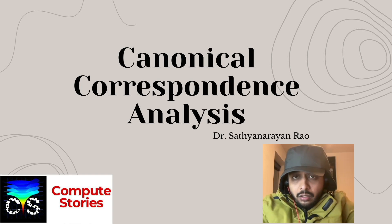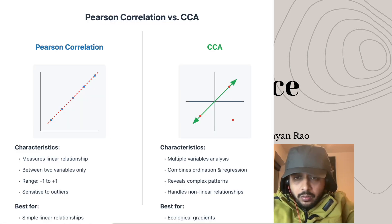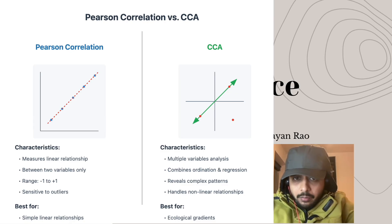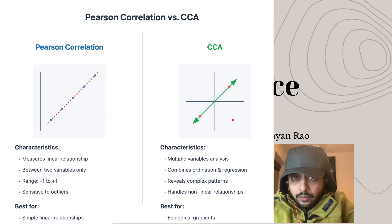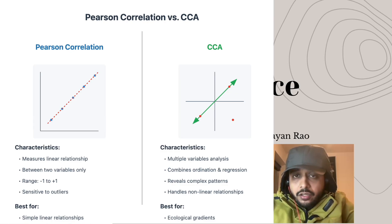Unlike the Pearson correlation coefficient that we normally see in many publications — the R-squared score which simply measures the connection between two variables — Canonical Correspondence Analysis allows us to explore more detailed, intricate relationships that may exist among various combinations of variables of interest.